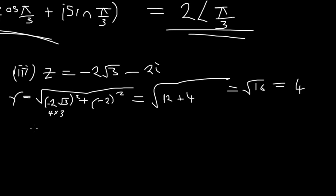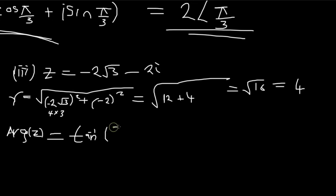Now let us find the argument of z. The argument is tan⁻¹(y/x) = tan⁻¹(-2 / -2√3). The two negatives cancel, leaving tan⁻¹(1/√3), and then we simplify further from there.